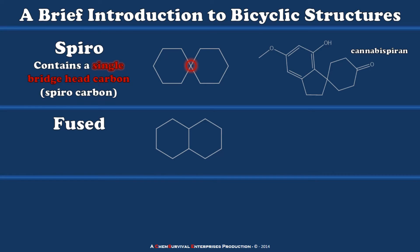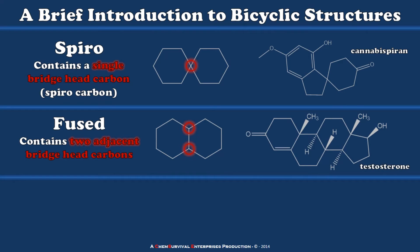Another class is fused bicyclics, and these are characterized by having two adjacent shared atoms, or two adjacent bridgehead carbons. A great example of a compound which has this motif is the polycyclic compound testosterone. Just like itself and many of its chemical cousins, which are very powerful hormones in the human body, they contain several — here's just one of the fused ring systems within a testosterone molecule.